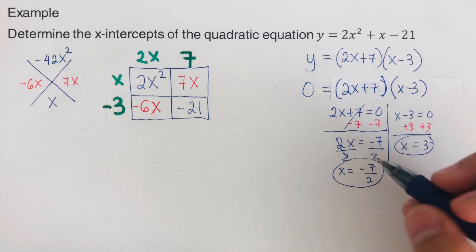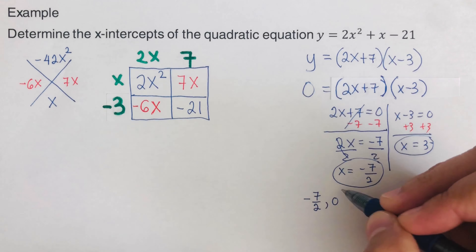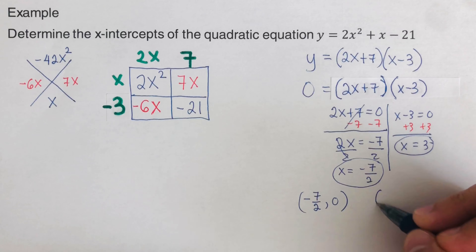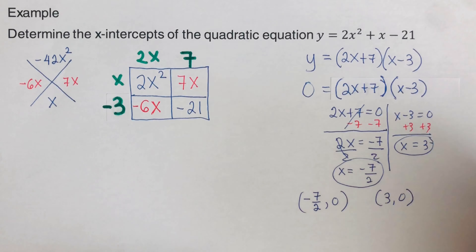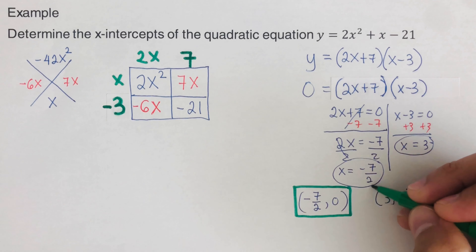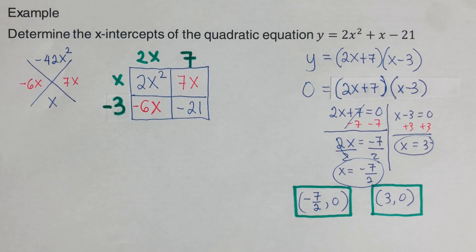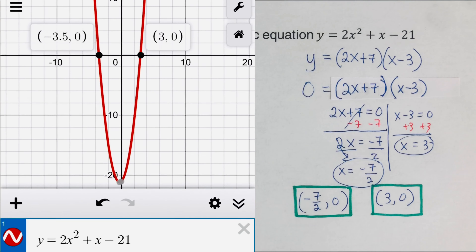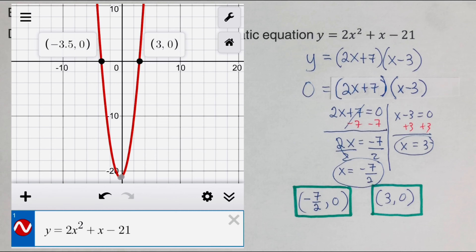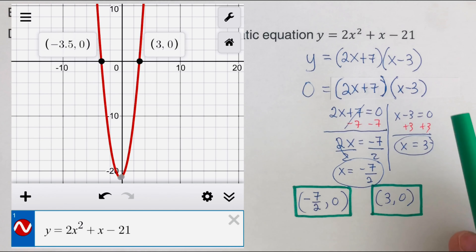In coordinate form, the x-intercepts are at (negative 7/2, 0) and (3, 0). Looking at the graphical version, we can see that the x-intercepts are at negative 7/2 and 3, confirming our algebraic results.